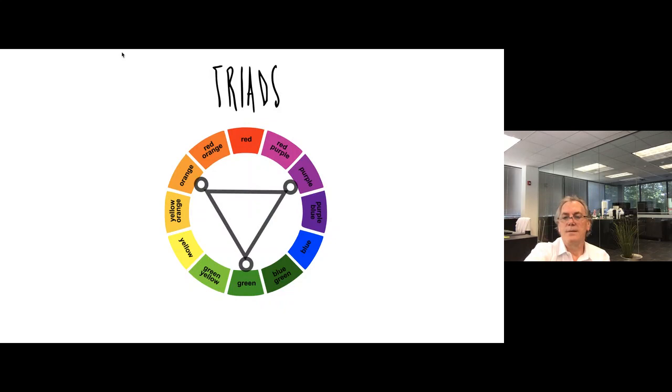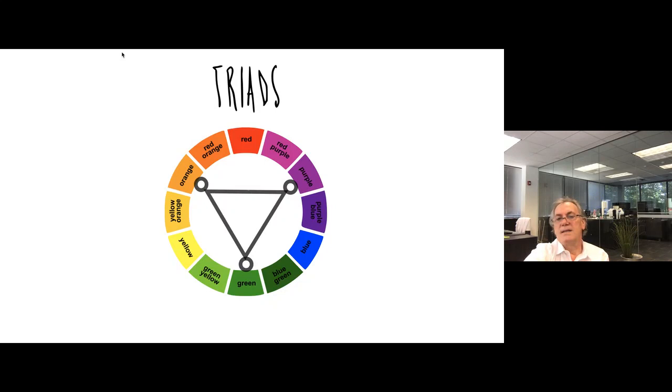The triadic system is used for colors that are evenly spaced around the wheel, and they create harmonies that tend to be more vibrant. The tetradic system is a color scheme used with four colors arranged into complementary pairs.